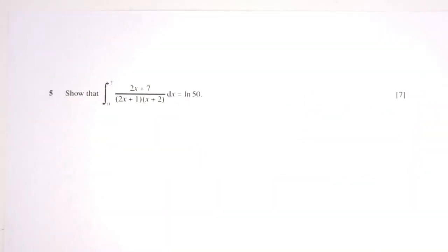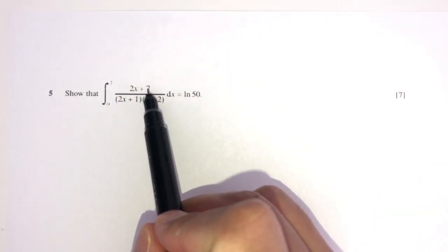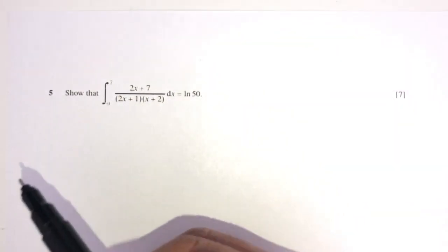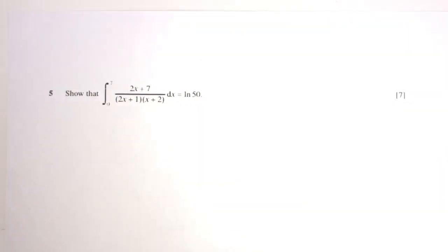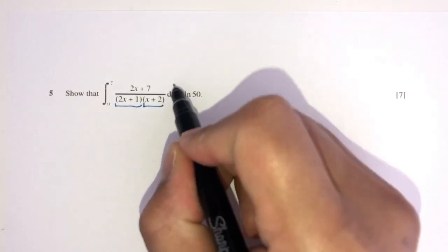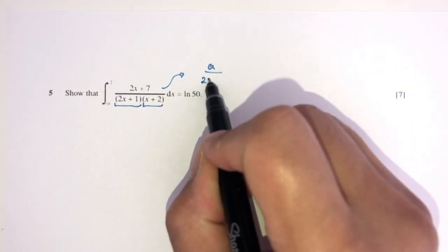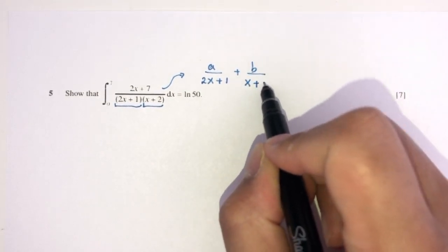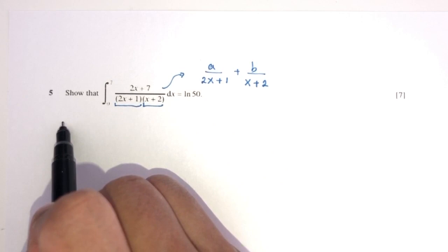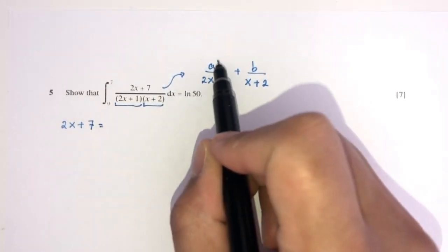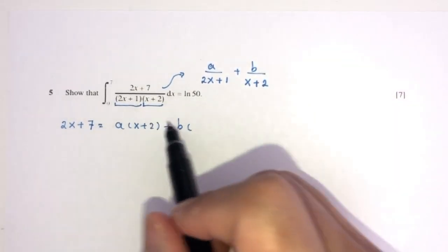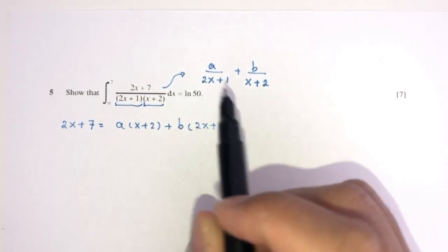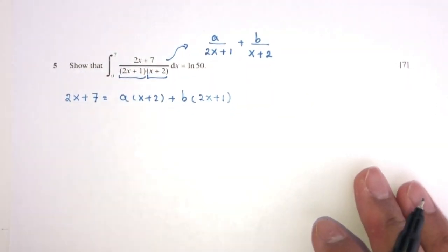Now let's move on to question number 5. We need to integrate (2x + 7)/((2x+1)(x+2)) dx. The first step is to break this into partial fractions. Since both factors are linear, we write: (2x + 7)/((2x+1)(x+2)) = A/(2x+1) + B/(x+2).